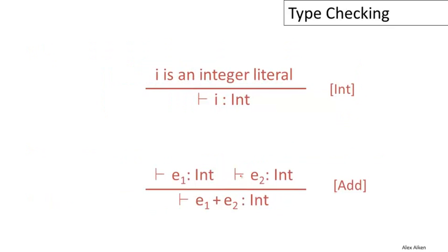With those definitions, we have enough to write a few simple type rules. If i is an integer literal, if it's an integer constant appearing in the program, then this rule says it is provable that i has type int. Every integer constant has type int.